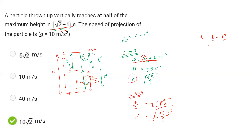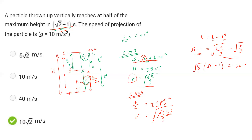T' is not root 2 minus 1. If we write T as root of 2h/g, then t' equals root(2h/g) minus root(h/g). Factoring, t' equals root(h/g) times (root 2 minus 1). Setting this equal to (root 2 minus 1), we get root(h/g) equals 1, so h equals g.